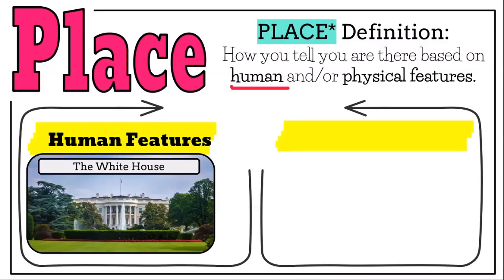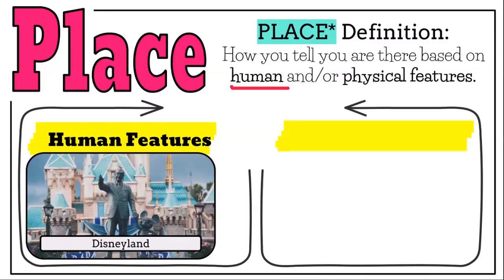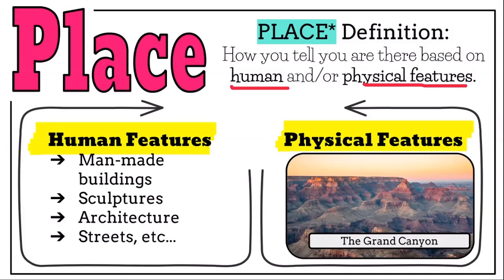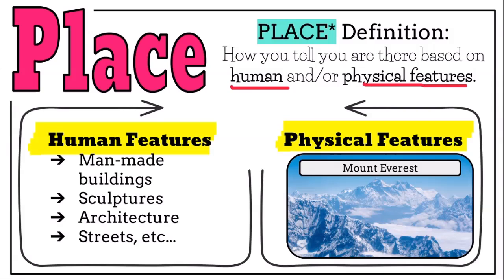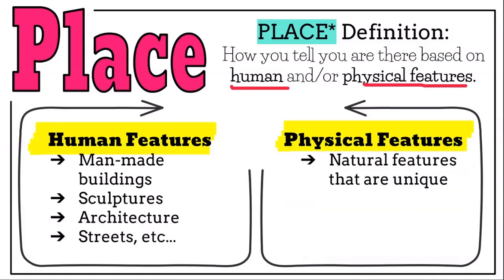Some examples of human features: you see the White House and you say, 'This is Washington, D.C.' You see the Eiffel Tower and you say, 'I am in Paris, France.' You see Disneyland's magic castle and you know you're in Anaheim, California. Physical features are natural features that are unique — not man-made. You can look at an image and know you're in the Grand Canyon in Arizona, or that you're looking at Mount Everest in the Himalayas, or the Sahara Desert.